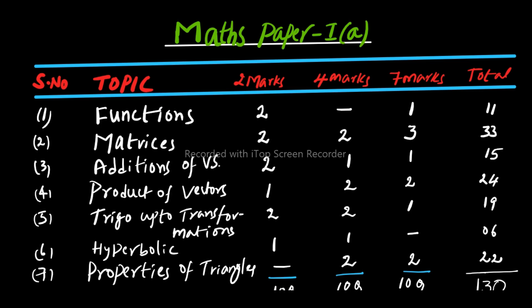Next is Matrices — this is a major topic and is part and parcel of 2 marks, 4 marks, and 7 marks. From Matrices: 2 two-mark questions, 2 four-mark questions, and 3 seven-mark questions will come, totalling 33 marks weightage. Whatever difficult-level portions have been deleted from Matrices, so only the easy portion remains. If you practice carefully, you can easily gain 33 marks.